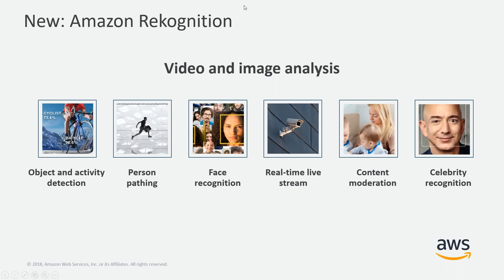Speaking of computer vision — and this is my personal favorite area of studying AI — I want to talk briefly about the Amazon Rekognition service. I want to draw attention to the rich array of features available in this service. We have object and activity detection. If you've been paying attention to the computer vision field, you'll notice this used to say object classification. We also have person pathing — a clever way to say tracking of individuals — with countless use cases.